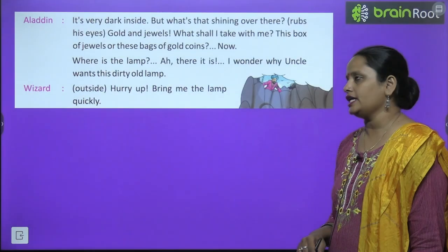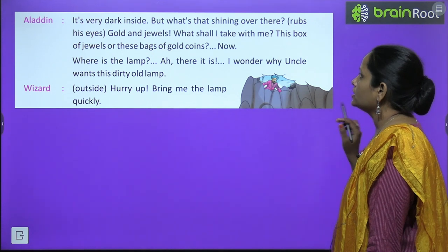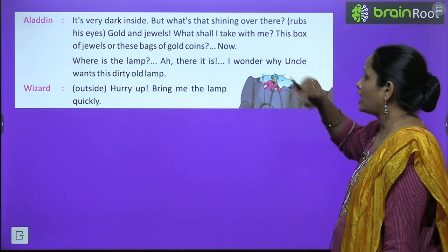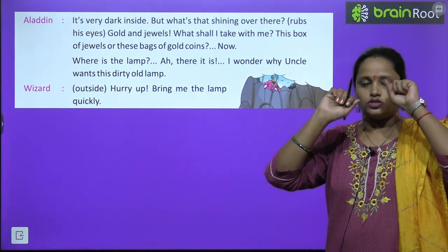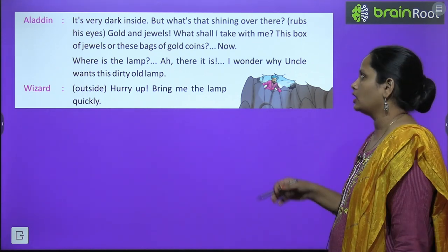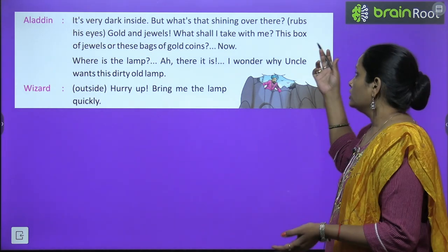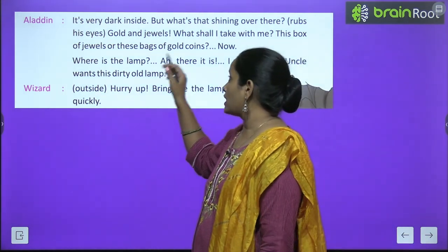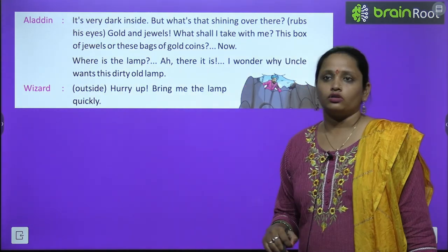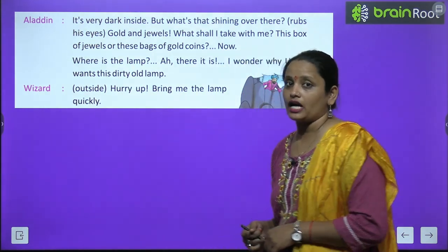Aladdin said: "It is very dark inside, but what is that shining over there?" He rubs his eyes. Gold and jewels — har jagah sona chandi bhara hua tha! He wondered: "What shall I take with me? This box of jewels or these bags of gold?" Then he remembered: "Where is the lamp? I came here to get the lamp for uncle."